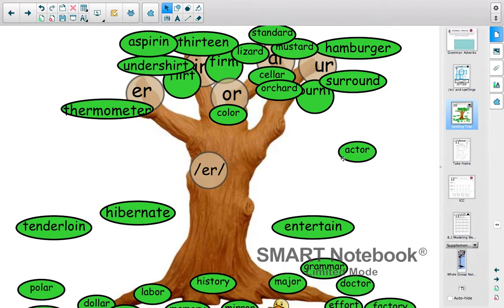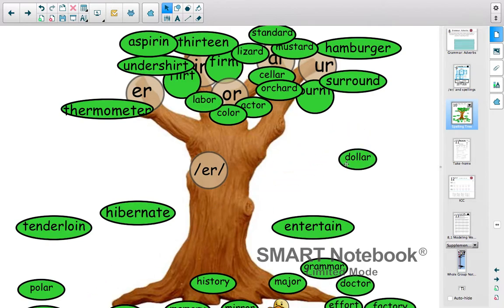A-T-R. Actor. Labor. Think about it. Labor. Where is it going to go? O-R. D-O-L-R. Dollar. Where is it going to go? Think about it. Or. No! That's air. It's going to be tricky.